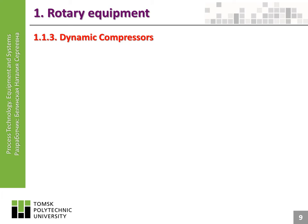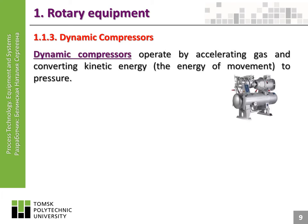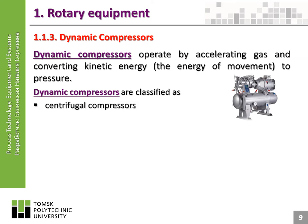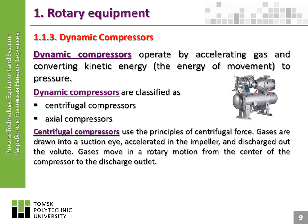Dynamic compressors operate by accelerating gas and converting kinetic energy — the energy of movement — to pressure. Dynamic compressors are classified as centrifugal compressors and axial compressors. Centrifugal compressors use the principles of centrifugal force: gases are drawn into a suction eye, accelerated in the impeller, and discharged out the volute. Gases move in a rotary motion from the center of the compressor to the discharge outlet.